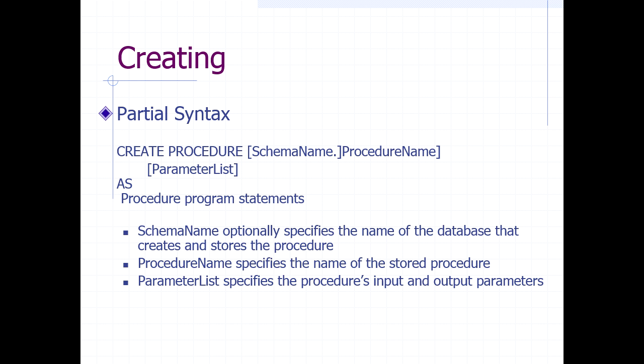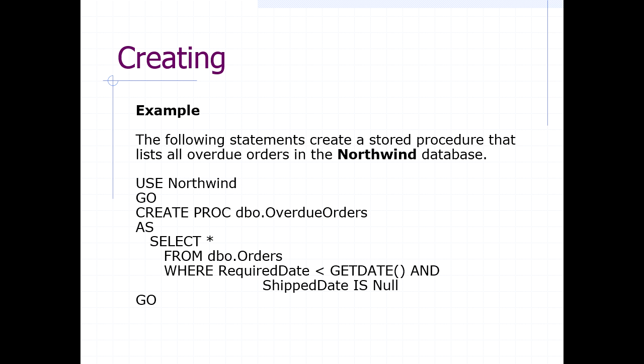Optionally, you have a parameter list — not all stored procedures need parameters, but many do, so you'll have a comma-separated list. Then our keyword AS, and then the body of the procedure itself. Here's a simple example of a basic stored procedure using the Northwind database — Microsoft's example database that was, frankly, not great.